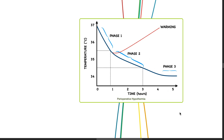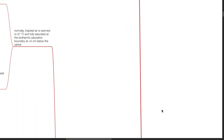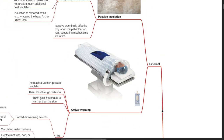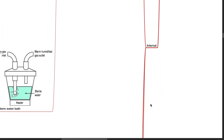Good evening, Dr. Phil here. Today we'll be discussing perioperative hypothermia Part 2. Methods of warming the patient can be external methods and internal methods.